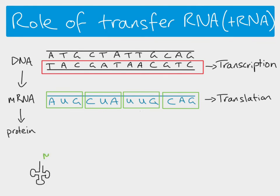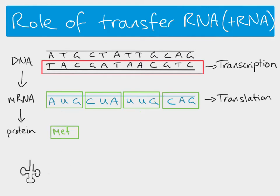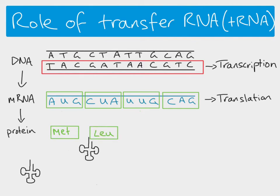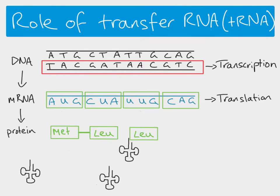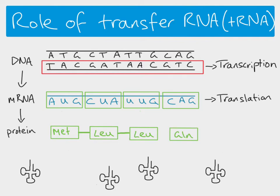The transfer RNA looks like this, and it is attached to an amino acid — in this case, methionine. The role of the transfer RNA is to bring the amino acid from the cytoplasm to the ribosome, place it in the correct position, and then leave. Another tRNA then brings the next amino acid, detaches, and those two amino acids are joined by a peptide bond. This happens repeatedly all the way along the messenger RNA until you have a sequence of amino acids matching the sequence of codons.